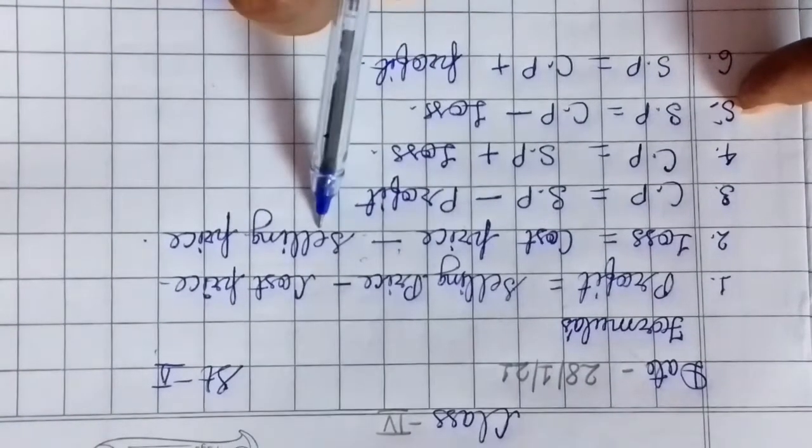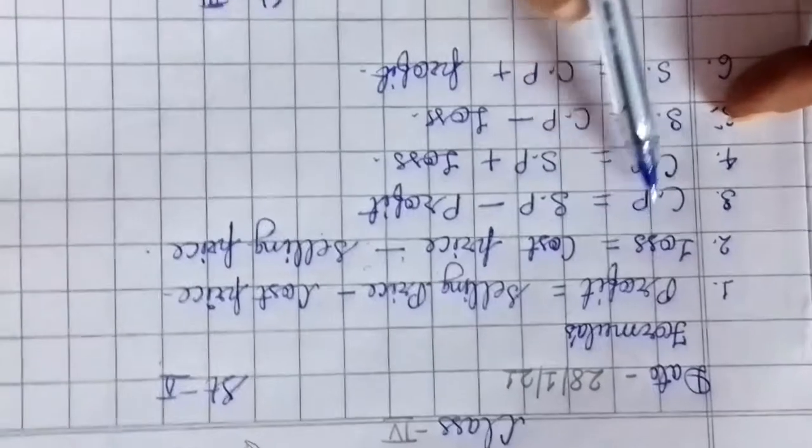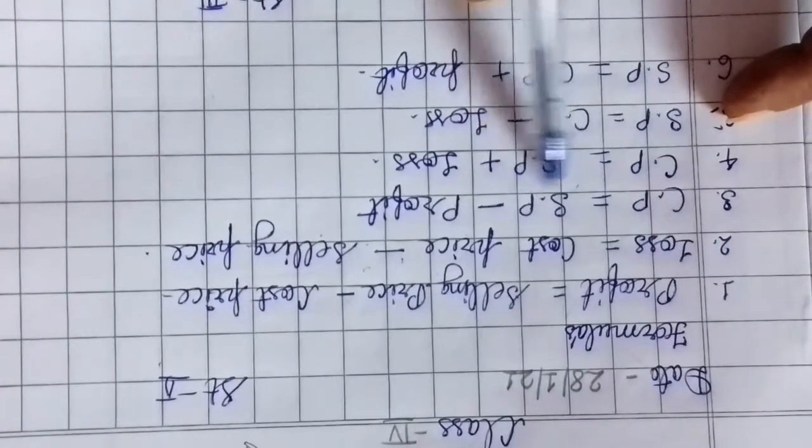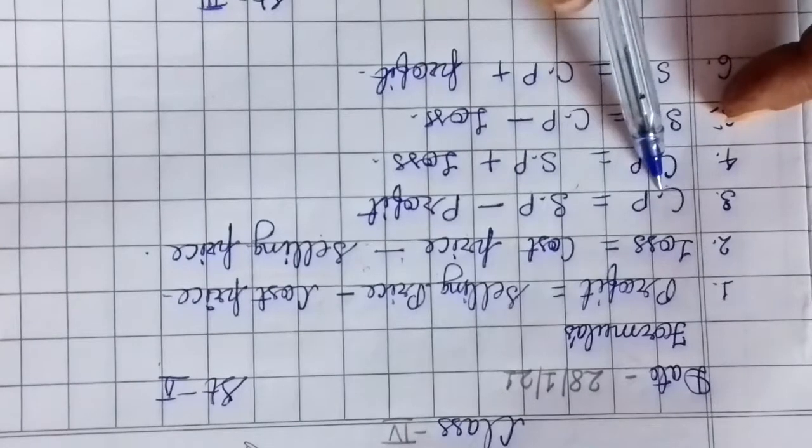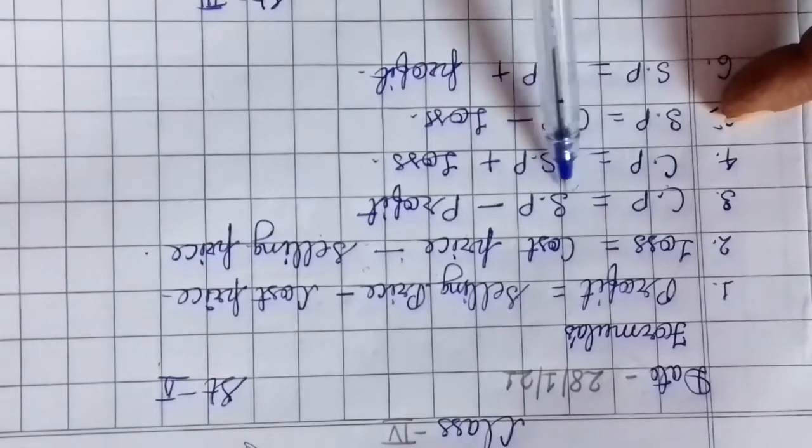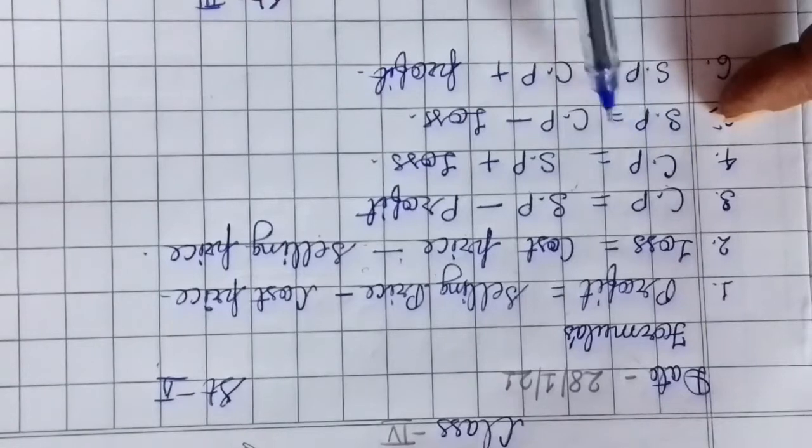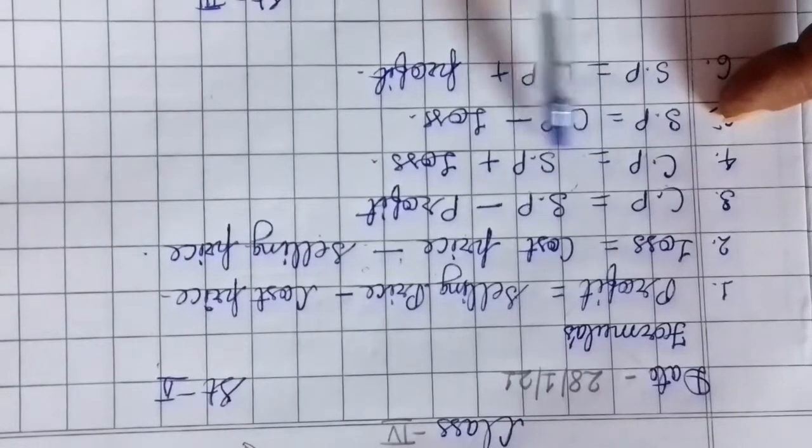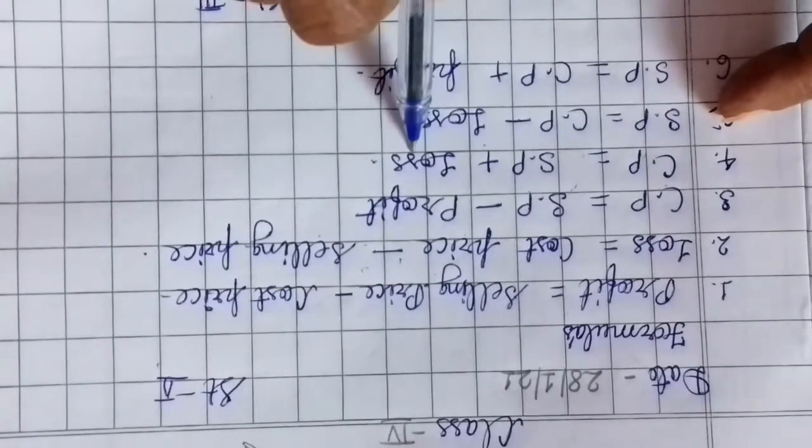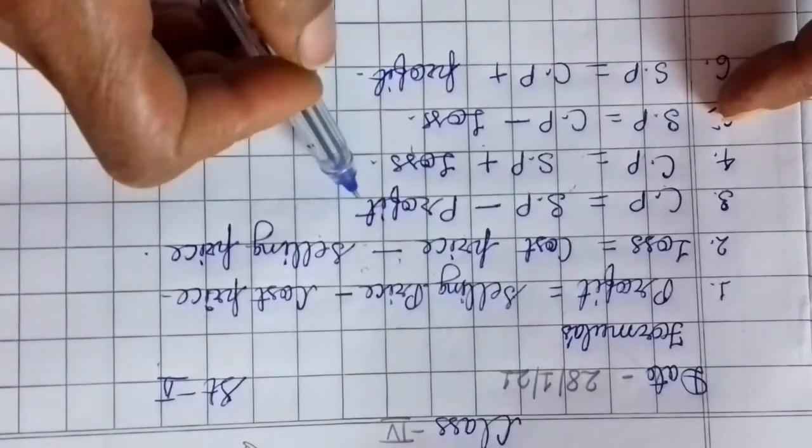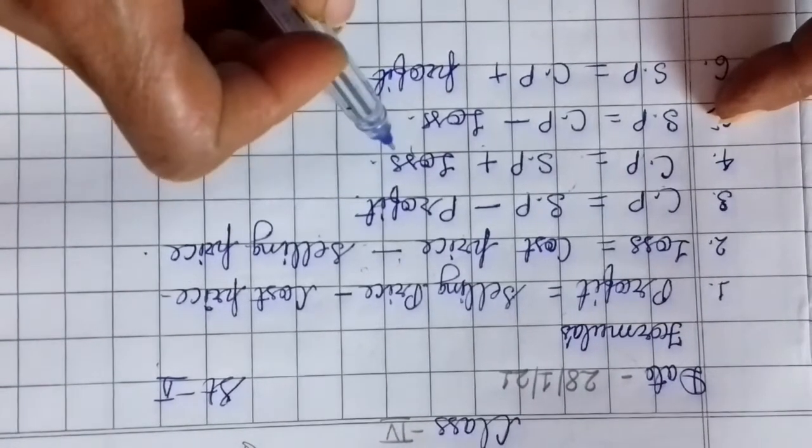If we minus Selling Price from Cost Price, we get loss. Third, CP formulas: Cost Price equals Selling Price minus Profit. Next, Cost Price equals Selling Price plus Loss. If profit is given, minus from SP to get CP. If loss is given, add to SP to get CP.